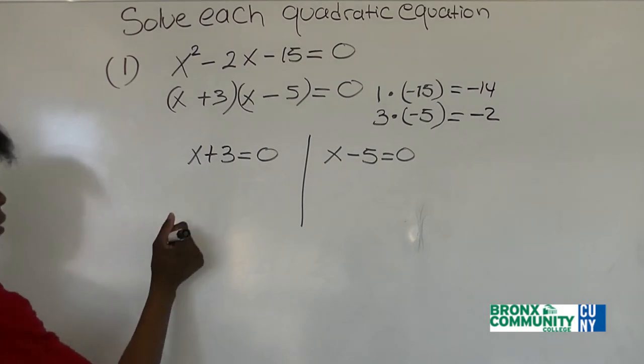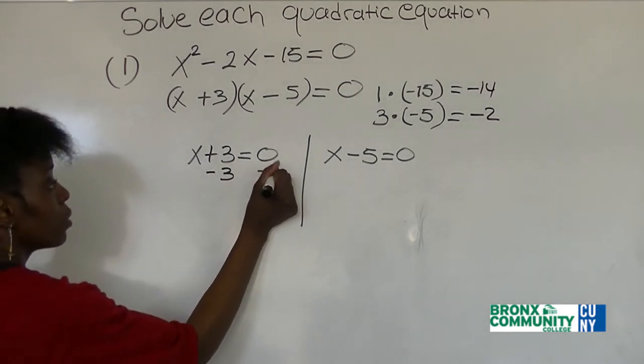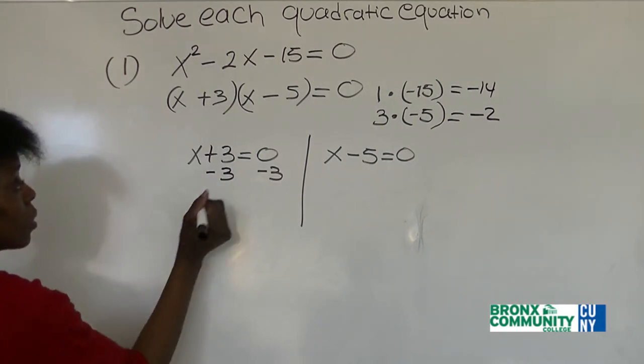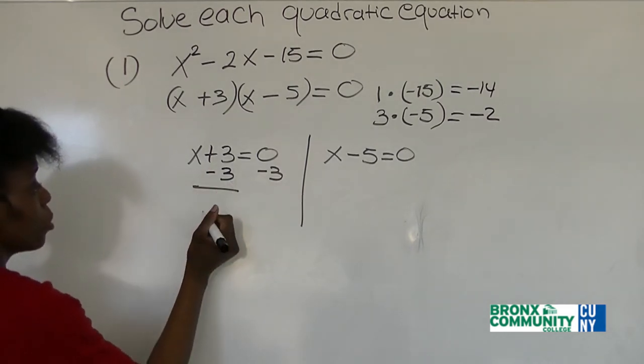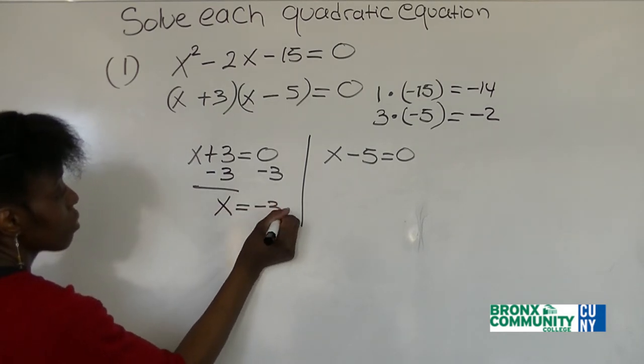How do we solve for x here? We subtract 3 from both sides of the equation. When we subtract 3, all we have left on the left hand side is x is equal to negative 3.